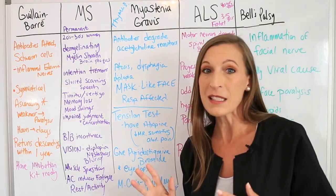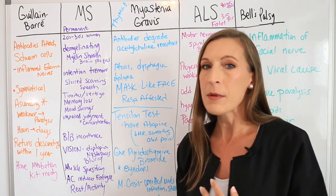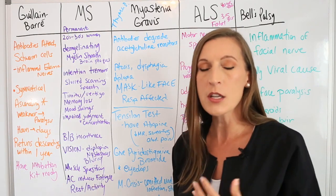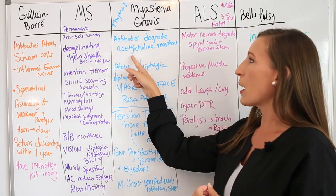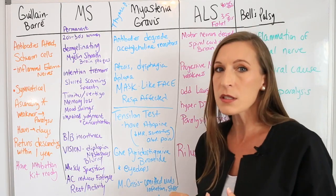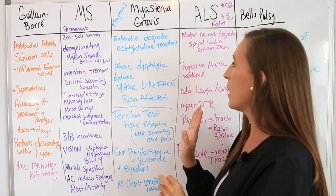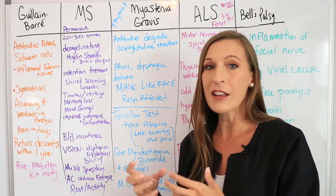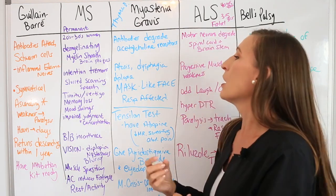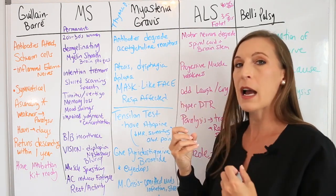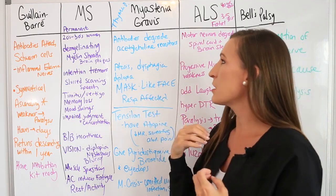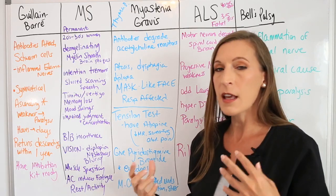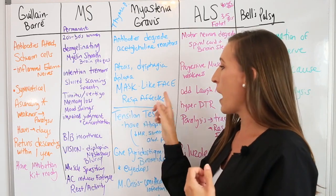Myasthenia gravis has to do with the thymus gland — don't forget thymoma, and they may need a thymectomy. The thymus isn't supposed to be enlarged in adults. Antibodies degrade the acetylcholine receptors. This is the only disease that deals with acetylcholine receptors on the muscle fibers that make muscles contract.